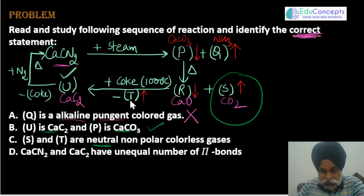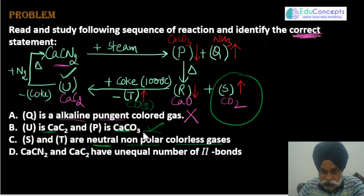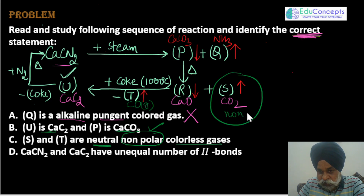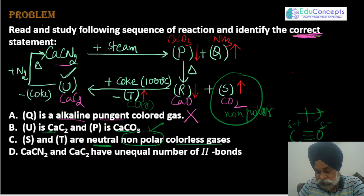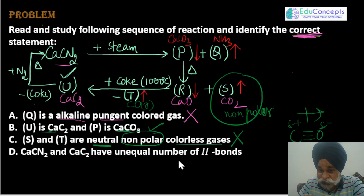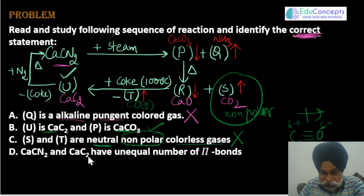Option 2 says U is calcium carbide and P is calcium carbonate — that is perfectly correct. Option 3 says S and T are neutral, non-polar, colorless gases. Calcium oxide (S) and carbon monoxide (T) are colorless, but carbon monoxide is polar because it has δ⁻ on oxygen and δ⁺ on carbon, so it is not non-polar. This option is also wrong.